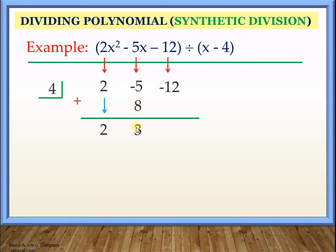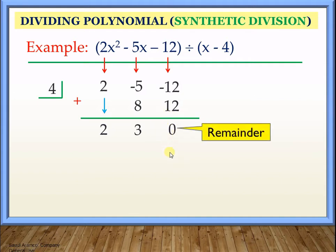We have another value here, so we multiply it by 4. So 4 times 3, placed here, will become 12. Performing the operation, negative 12 plus 12 will give us 0. The last value here will be our remainder. Since we don't have a remainder, this is 0. If the last value here is 0, we can conclude that x minus 4 is a factor of 2x squared minus 5x minus 12.